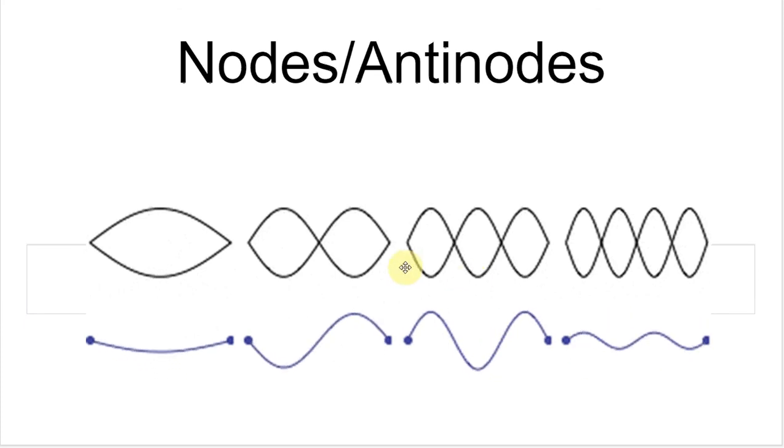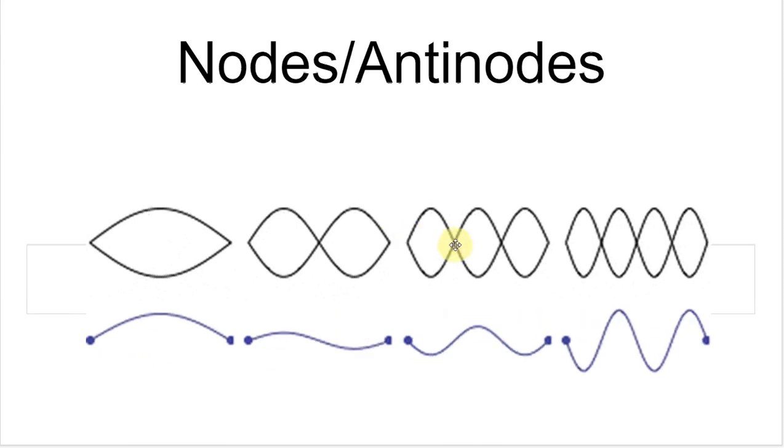So when we look at a still image, like a lot of you notice, what nodes are going to look like is they're going to be on the center line. So like node, node, node.